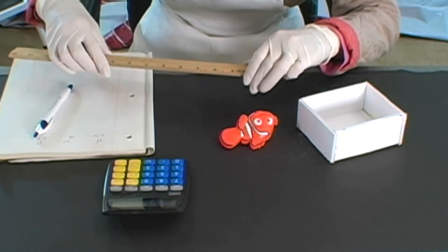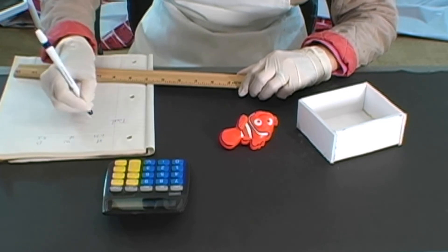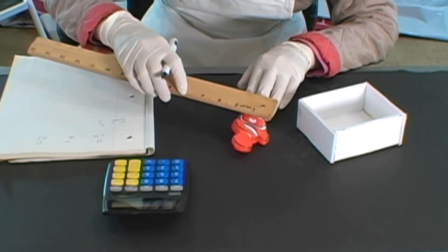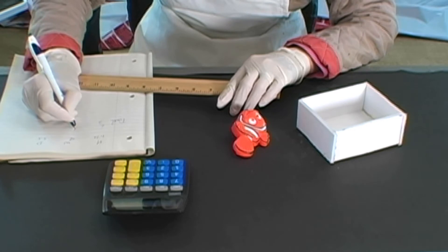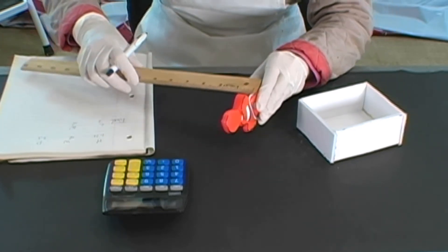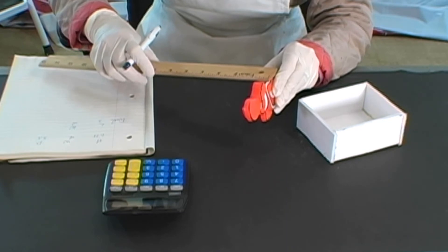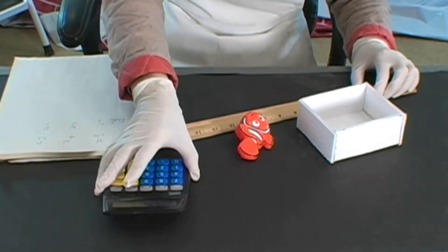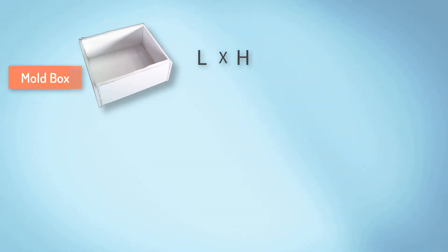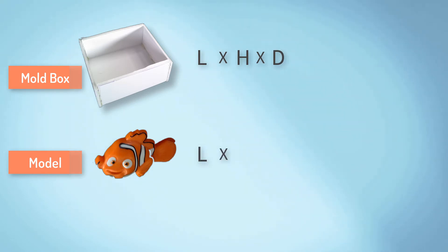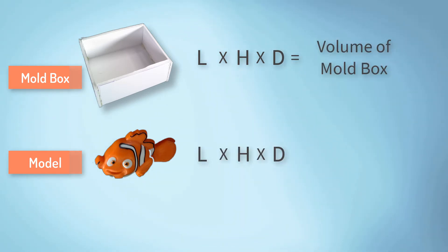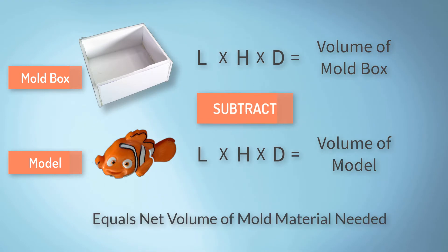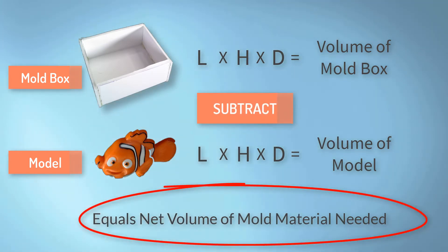Now do the same measurements for the model or pattern. You can ignore minor undercuts or model drafts — just measure the outside dimension less any larger voids. Then multiply the three dimensions together to find the volume of the model in cubic inches. Next, subtract the volume of the model from the volume of the mold box to give you the net volume.